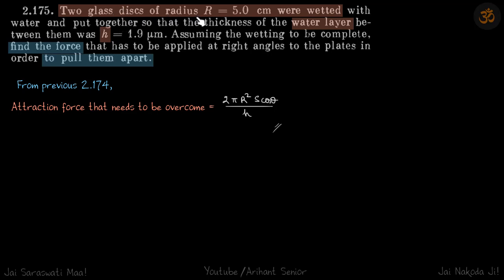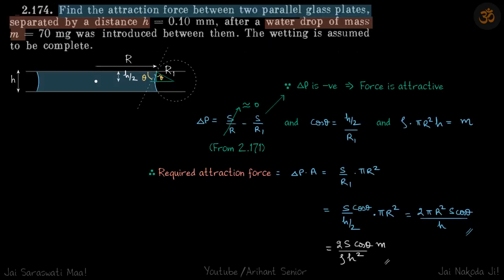Two glass disks of radius R have a water layer between them of height H. We need to find the force to pull them apart. We have already seen in the previous problem that when you have two glass disks...